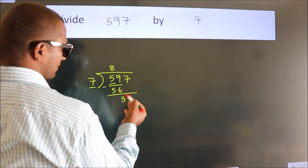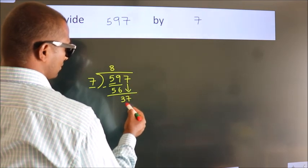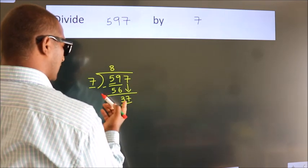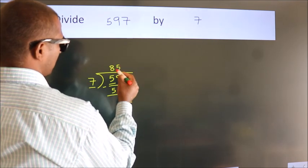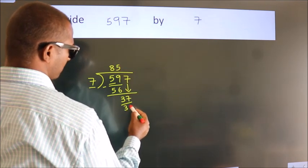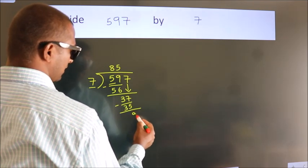After this, bring down the beside number. So 7 down. So 37. A number close to 37 in the 7 table is 7×5=35. Now we subtract. We get 2.